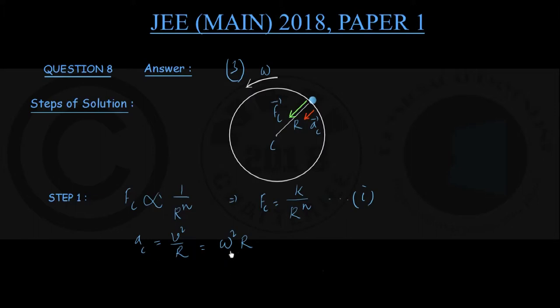Ac is equal to omega squared r, omega being the constant angular speed of revolution and capital R is the radius of the circular path traveled by the particle. This is my equation number 2.